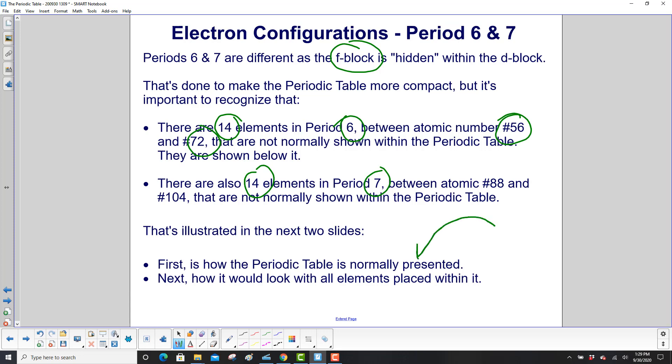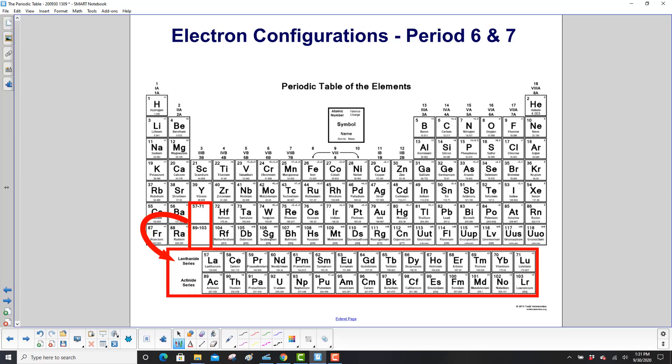First, this is what you see most of the time when you see a periodic table. And then second, what if we placed all the elements within it in the right place? Here's a fairly standard periodic table. And you have this blank over here. Those are elements 57 through 71. And they squeeze, all of them squeeze into that little block. Then below it, you have the actinide series from atomic number 89 to 103. And all of them squeeze into this little block.